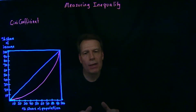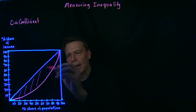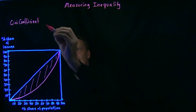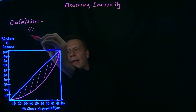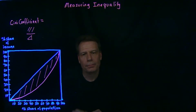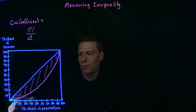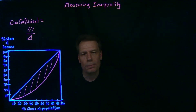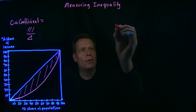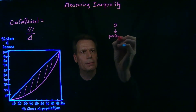The Gini coefficient measures income inequality by looking at the area between the diagonal and the country's actual income distribution, then dividing that area by the triangle formed below the diagonal. So if we had a country with perfect income equality, the income distribution would lie on the diagonal. There would be no shaded area, so the numerator would be 0. Zero divided by anything is 0, so a Gini coefficient of 0 means a country with perfect equality.